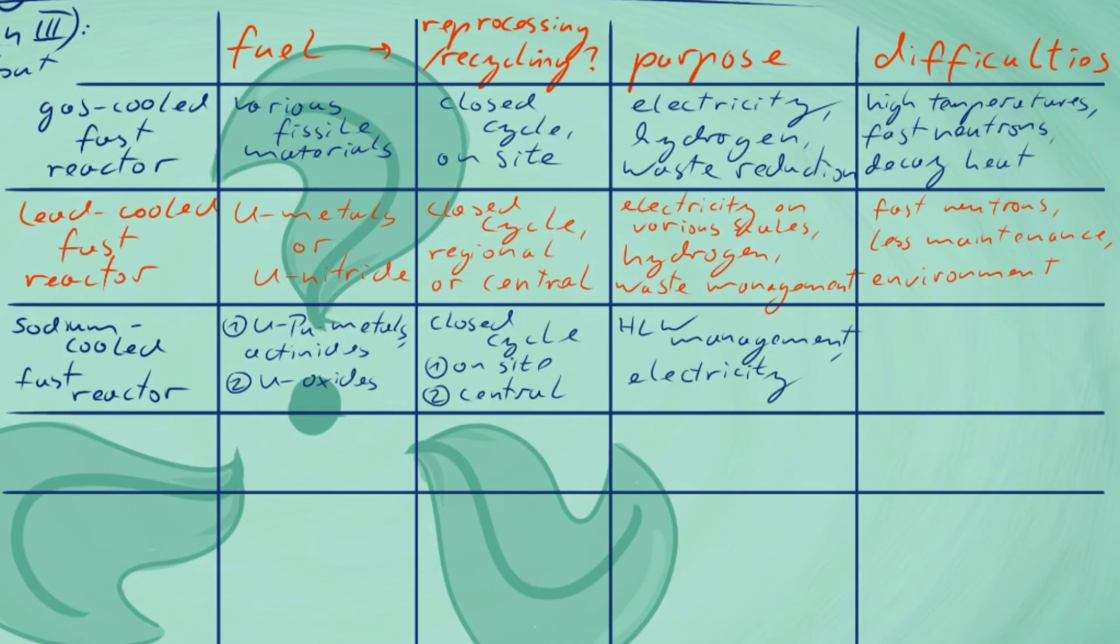In the first case, they would be recycled on-site, and the second in central facilities. Its main purpose would be to eliminate highly radioactive waste and to generate electricity. Challenges with this reactor type include sodium's high reactivity in regards to water and air, and difficult maintenance and reprocessing procedures.